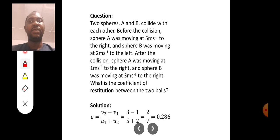Now, look at this question. You see, two spheres, A and B, collide with each other. Before collision, sphere A was moving at 5 meter per second to the right. Sphere B was moving at 2 meter per second to the left. Opposite direction.